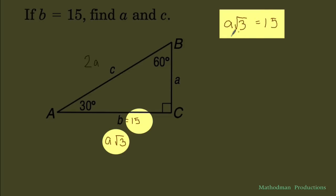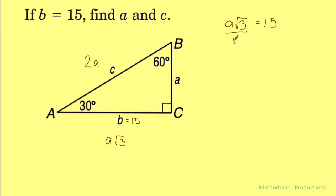To have a by itself we can divide both sides by the square root of 3, and then this cancels off. Now I get a equal to 15 divided by the square root of 3.